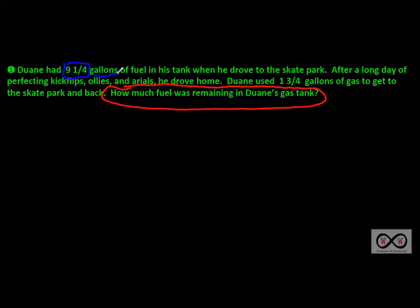Nine and one-fourth gallons of fuel in his tank — that's right, so Duane had that much when he left for the skate park. Sentence two: after a long day of perfecting kickflips, ollies, and aerials, he drove home — any math information? No, just story information. Next sentence: Duane used one and three-fourths gallons of gas to get to the skate park and back. One and three-fourths gallons is what he used. Our math job is to figure out how much fuel was remaining in Duane's gas tank.